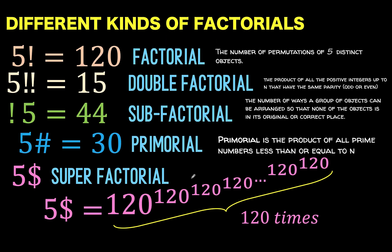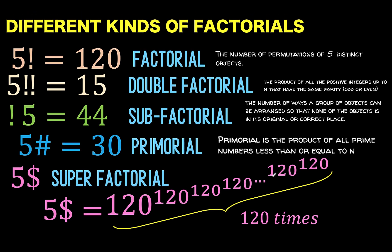This number is of course very, very large, and there's no need for us to compute to determine which among these has the highest value. Of course 5 super factorial has the highest value. To summarize: 5 factorial is 120, 5 double factorial is 15, the sub-factorial of 5 is 44, 5 primorial is 30, and the super factorial of 5 is this extremely large number. So our answer is the super factorial of 5 has the highest value among these 5 factorials.